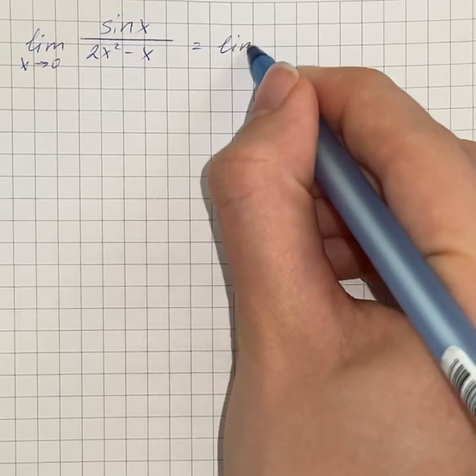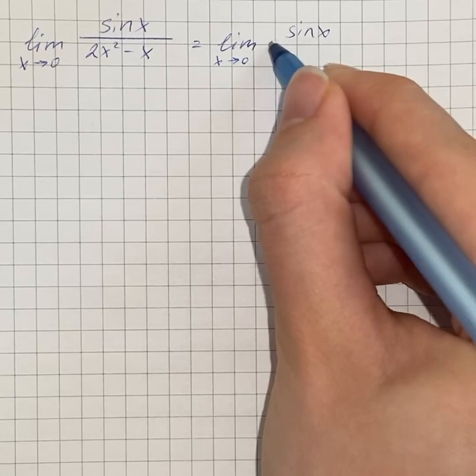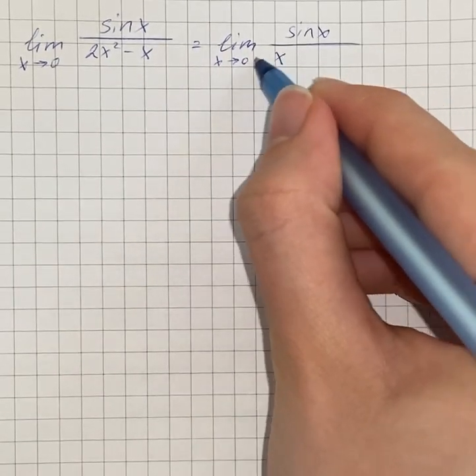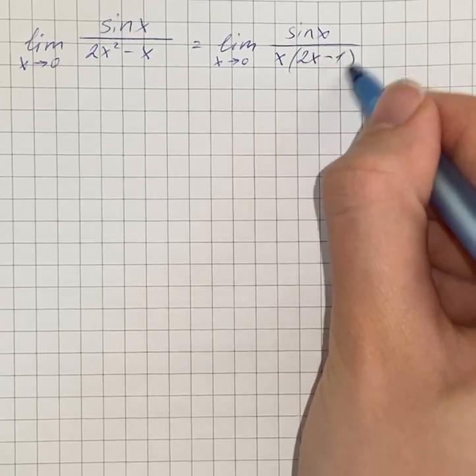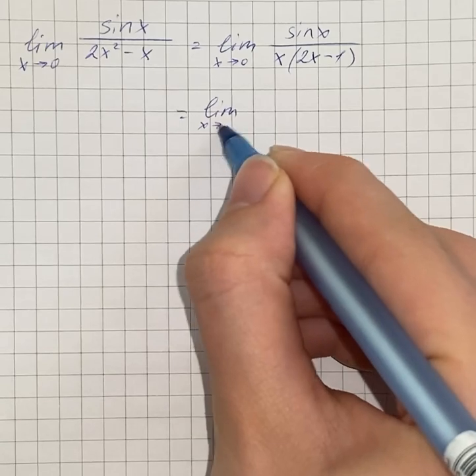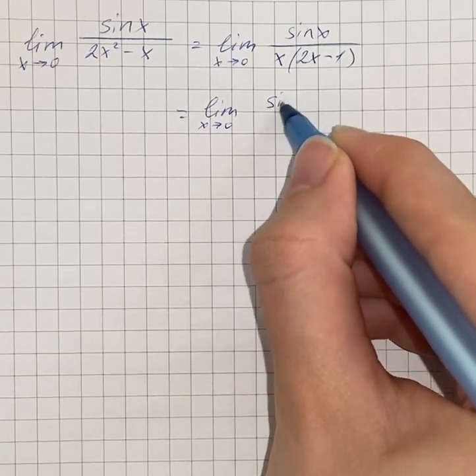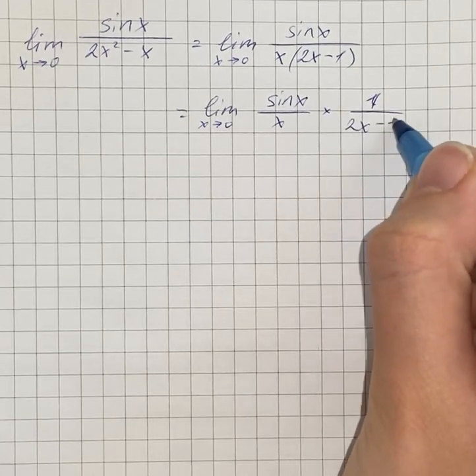So it's going to be limit as x approaches 0 of sine of x. In the denominator we can take out a common factor x and multiply by 2x minus 1. So that equals limit as x tends to 0 of sine of x over x times 1 over 2x minus 1.